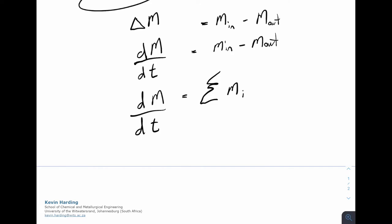That's a summation term that I've drawn up there. For i is equal to 1 to i is equal to n, for i is equal to a stream, where i is going to be positive if it's an incoming stream and i is going to be negative if it's an outgoing stream. That's just simply the in versus the out.